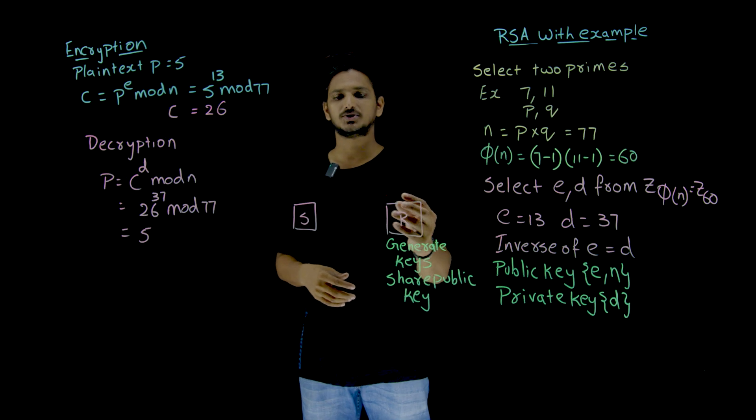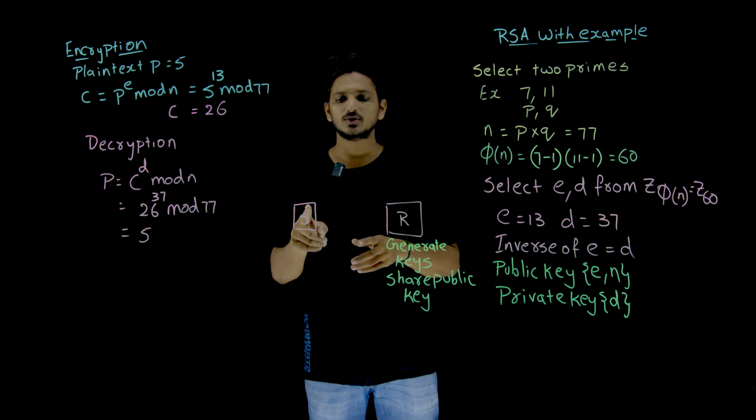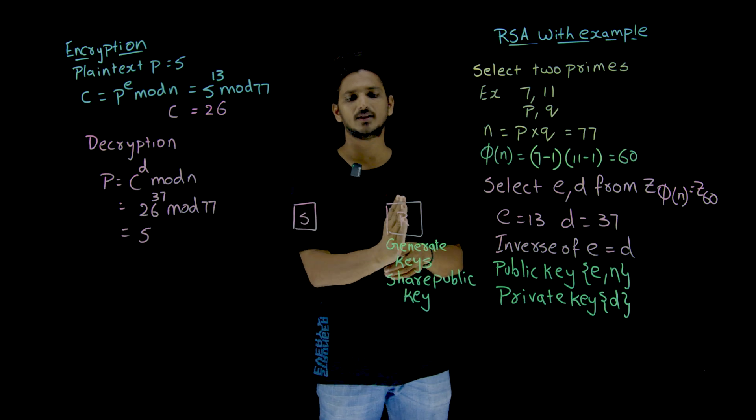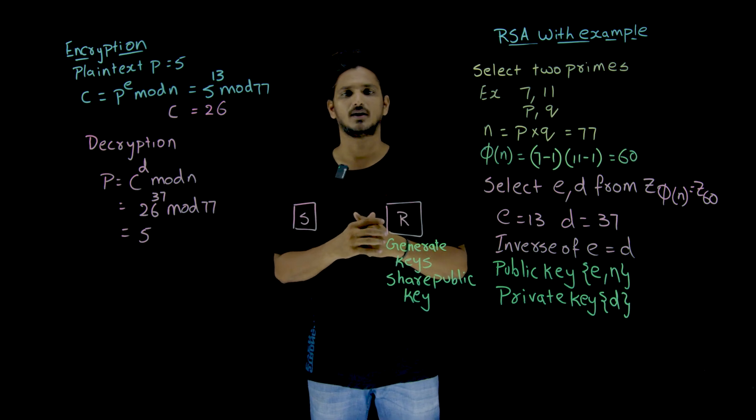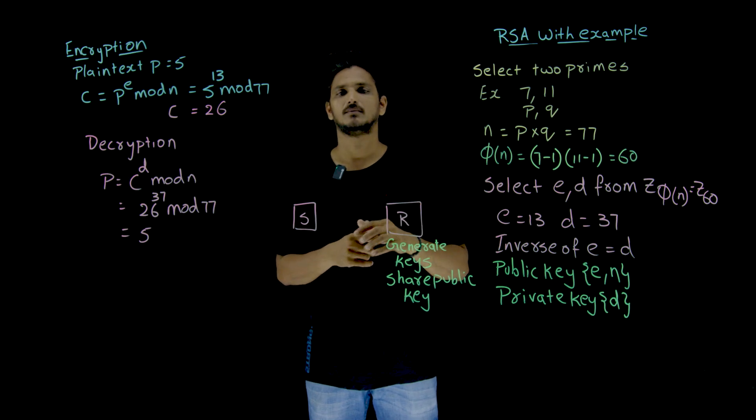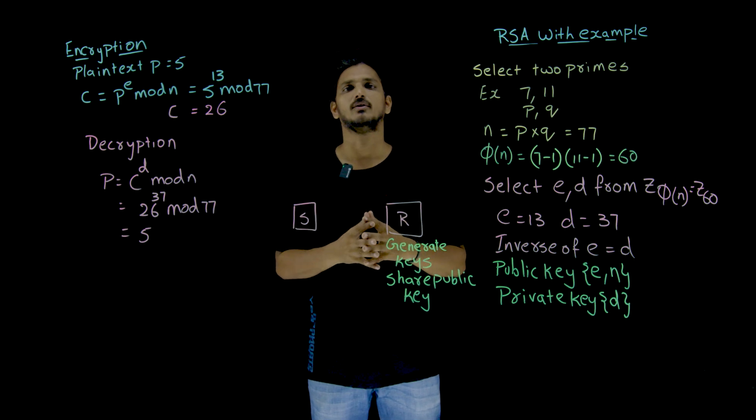The public key is shared with the sender. So he is going to use the public key and encrypt the data and send it to the receiver. By using the private key, the receiver is going to decrypt it. That is what happens in asymmetric key cryptography.